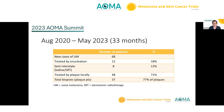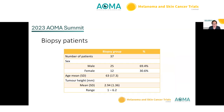Over the 33-month period, 68 new cases of uveal melanoma were seen. 18% were treated with enucleation, 12% were sent interstate for iodine brachytherapy or stereotactic radiotherapy, leaving 71% treated with plaque locally, of which 37 patients underwent a biopsy. Of biopsy patients, 70% were male, 31% female, mean age 63 years. Mean tumour height was 2.94 millimetres, ranging from 1 to 6.2 millimetres.